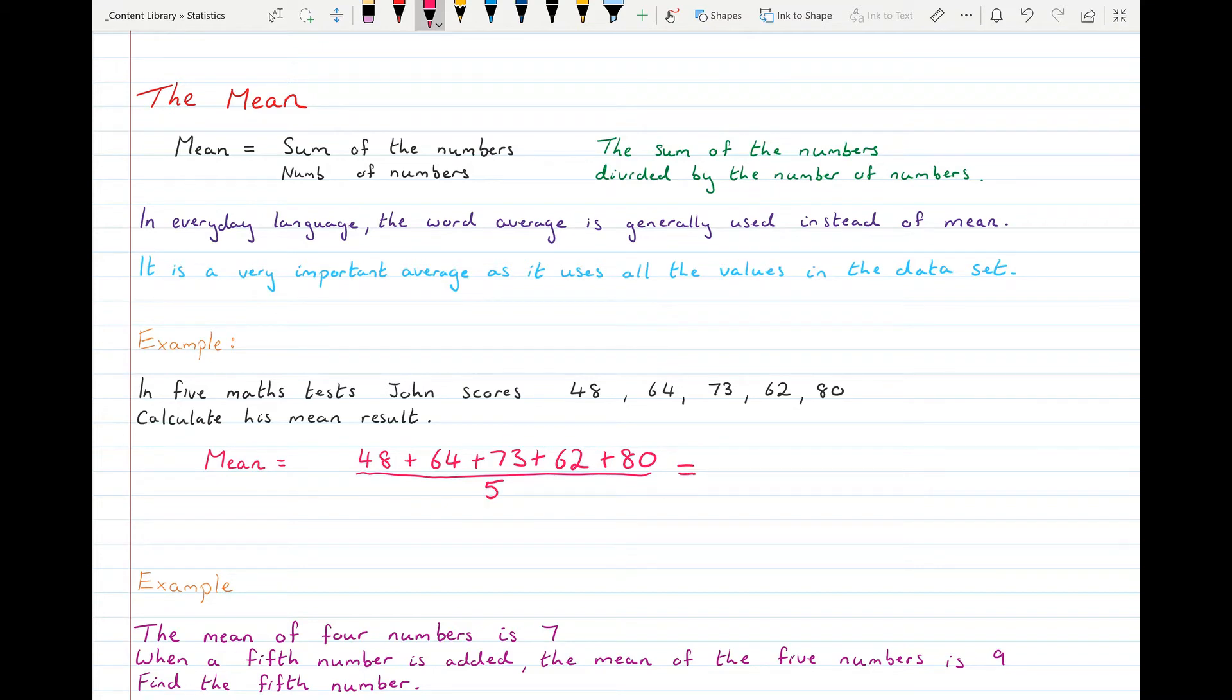That goes into the calculator and we get 327 over 5, which works out to be 65.4. So the average or the mean, I should be saying, the mean value for that data set of John's test scores is 65.4.